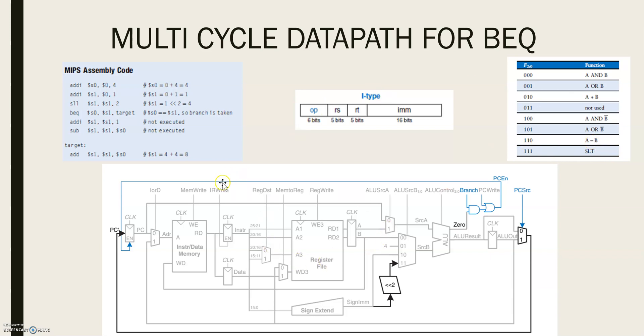Meanwhile, the datapath must compute the next value of PC if the branch is taken. PC will be given by PC plus 4 plus the sign immediate value multiplied by 4. Now why sign immediate value is multiplied by 4?